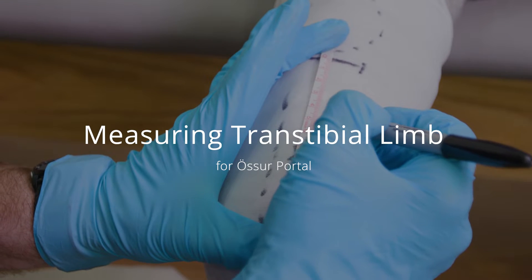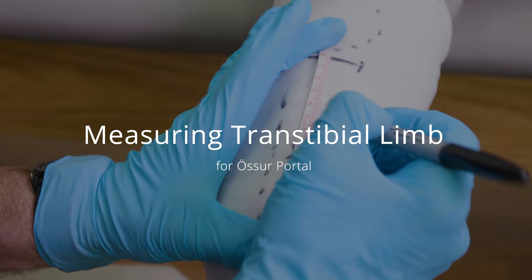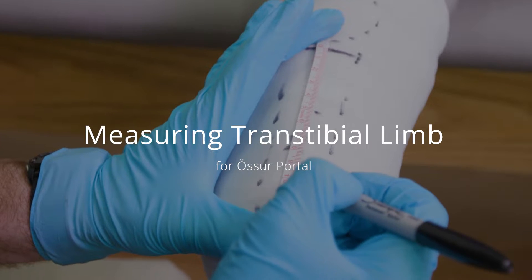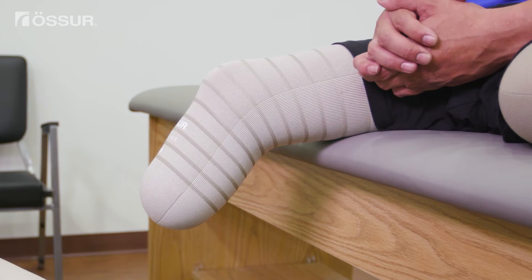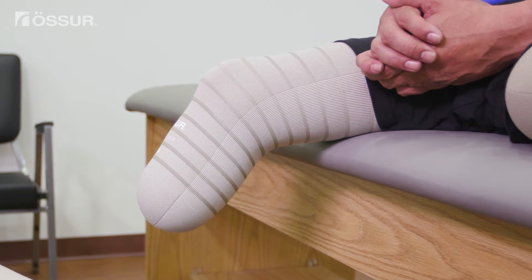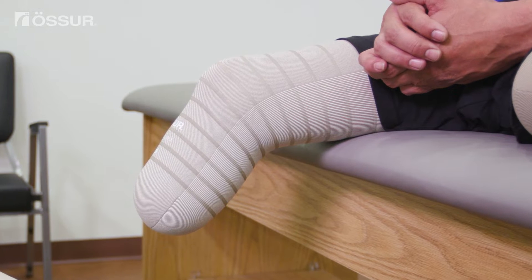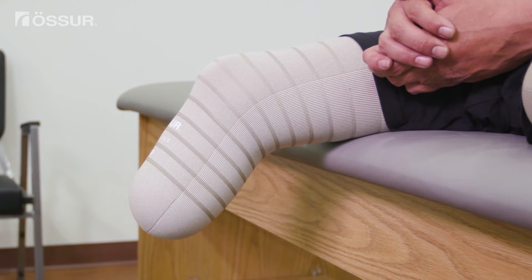This video demonstrates how to take measurements of a transtibial residual limb for the OSIR portal. Keep in mind that all measurements and scanning should be performed with the amputee wearing the type and thickness liner they will use with the new socket.